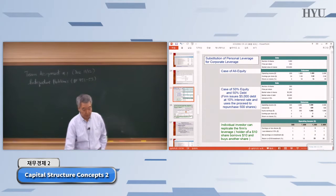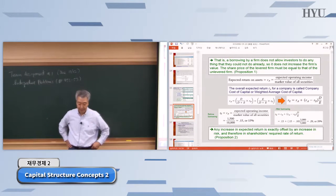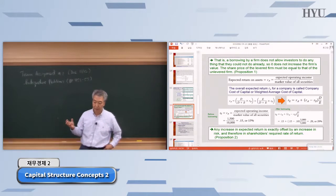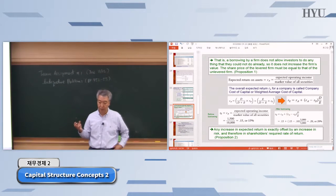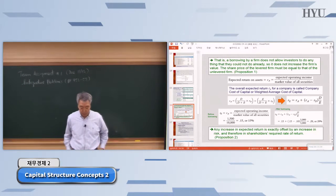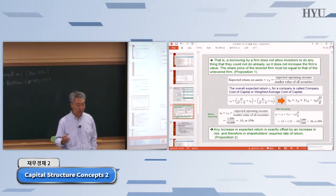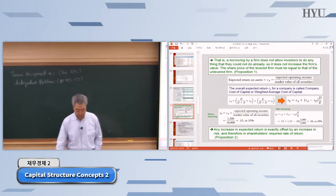This is the substitution of personal leverage for corporate leverage. Instead of the company borrowing, the individual shareholder could have done it themselves. So it does not increase the firm's value to the investor. When the firm increases leverage, it can increase ROE for investors — but investors themselves could have done the same thing. Therefore, the share price of the levered firm must equal that of the unlevered firm.